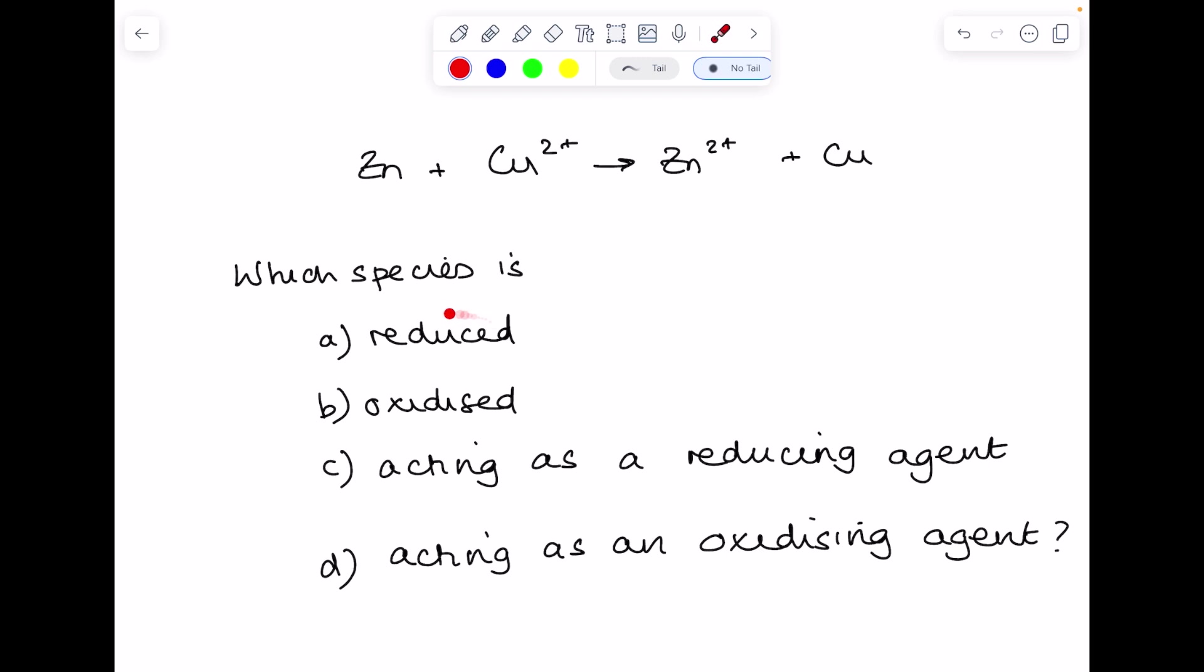Which species is reduced? Now we're looking for the definition that involves electrons. Reduction, remember, is gain of electrons. So what over here has gained electrons? Well, I'm hoping you can see that the Cu2+ has become neutral on the right-hand side. So what must have happened is that Cu2+ must have gained electrons in order to become neutral. And I could even write out the equation just to show you, to prove that this must have taken place. There's the gain of electrons. So the answer here is Cu2+.